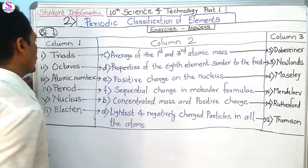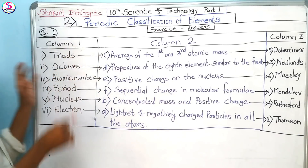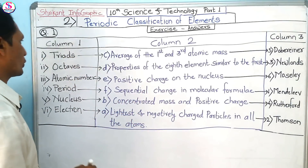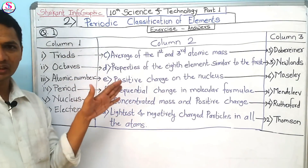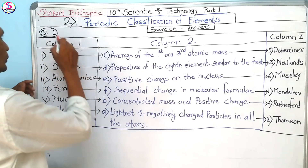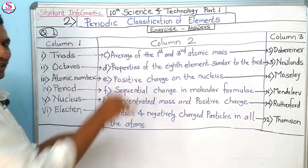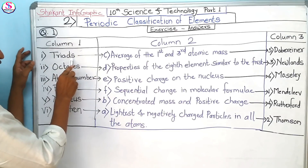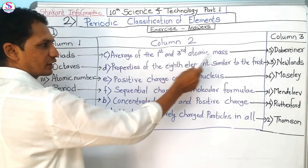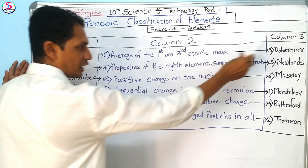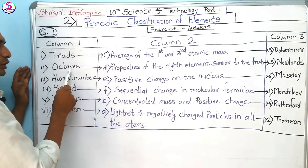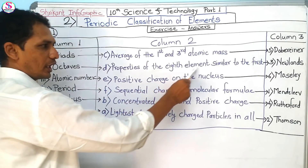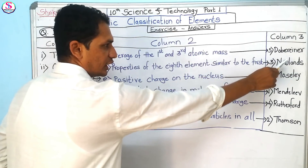I have matched all the answers here, so I am not writing the questions — I am just putting the question number and the answers. The first is: the average of first and third atomic mass is related to Dobereiner's triads.